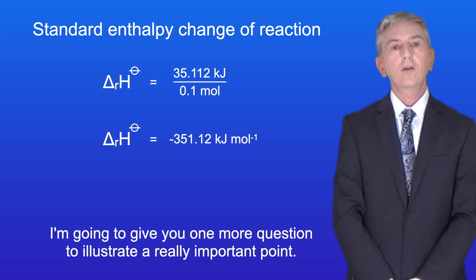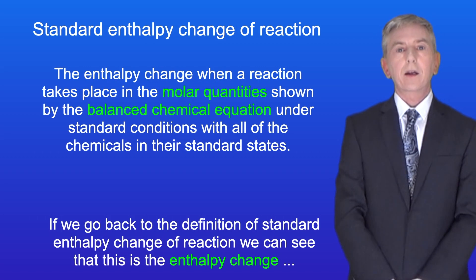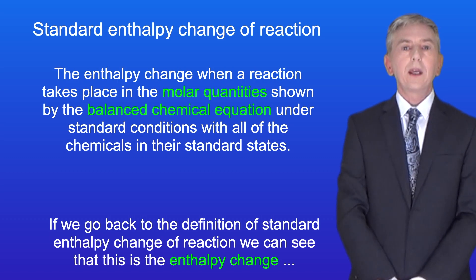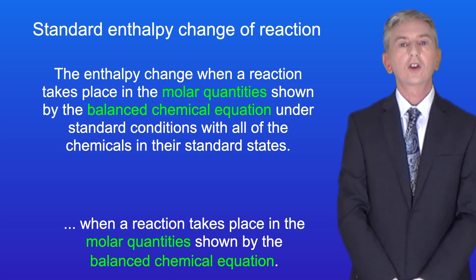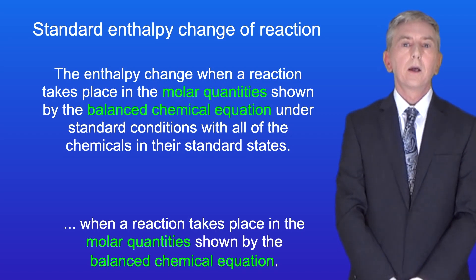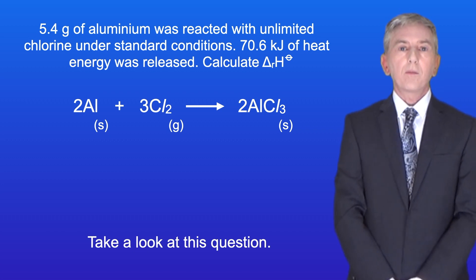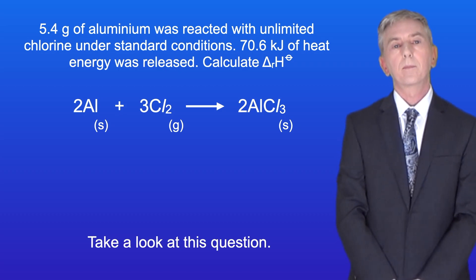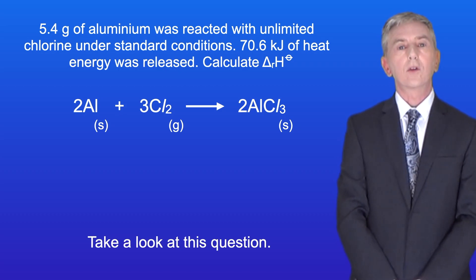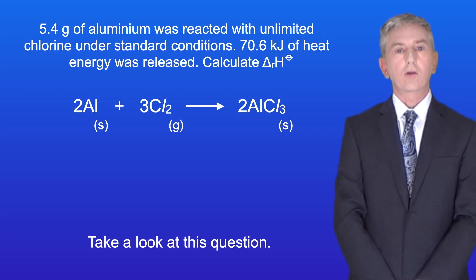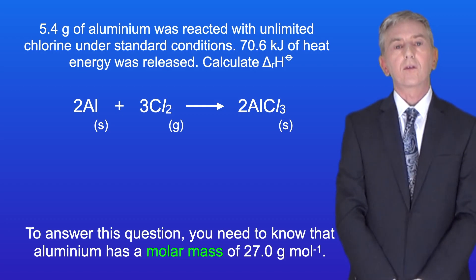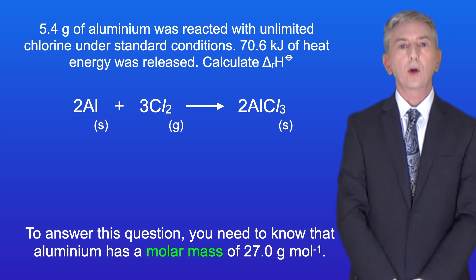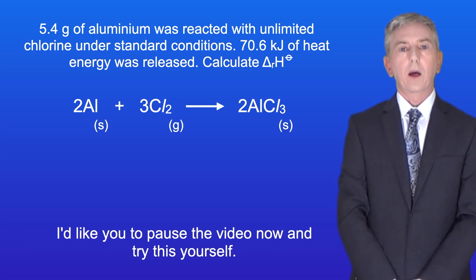I'm going to give you one more question to illustrate a really important point. If we go back to the definition of standard enthalpy change of reaction, we can see that this is the enthalpy change when a reaction takes place in the molar quantities shown by the balanced chemical equation. So take a look at this question: 5.4 grams of aluminium was reacted with unlimited chlorine under standard conditions. 70.6 kilojoules of heat energy was released. Calculate the standard enthalpy change of reaction. To answer this question, you need to know that aluminium has a molar mass of 27.0 grams per mole. Pause the video now and try this yourself.